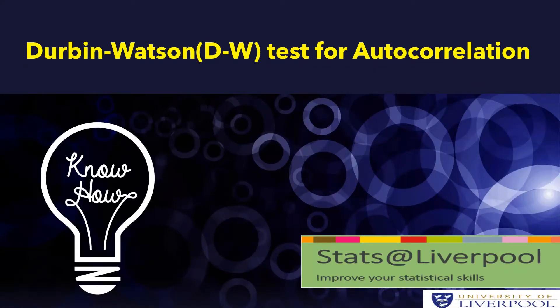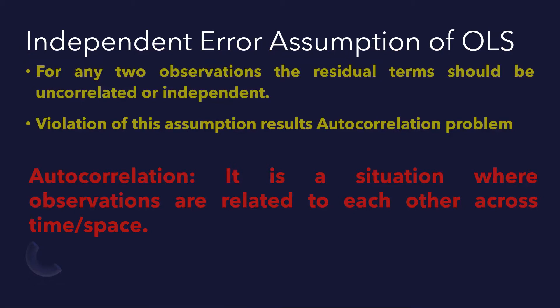Hello learners, today we will show how we can perform the Durbin-Watson test for detecting the autocorrelation problem. One of the important assumptions for the OLS model is that of independent errors — that means for any two observations, the residual terms should be uncorrelated or independent. Violation of this assumption results in an autocorrelation problem, which is a situation where observations are related to each other across time or space.